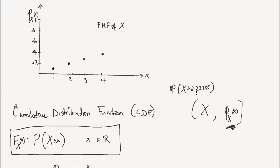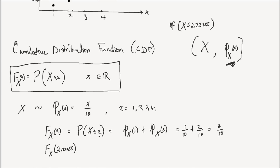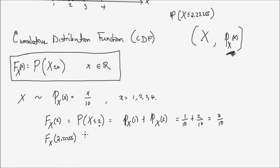The points less than 2.22255 which have a probability mass are again the point 2 and the point 1. Therefore, I can have my CDF at that point to be equal to the PMF at 1 plus the PMF at 2, which again is 3 over 10.